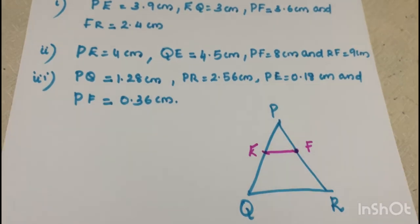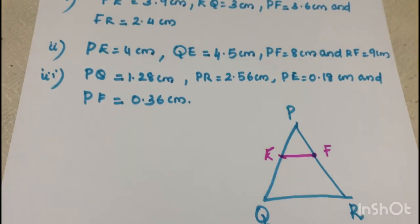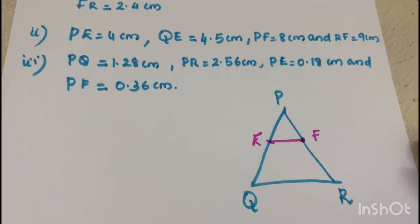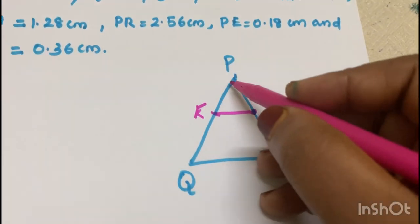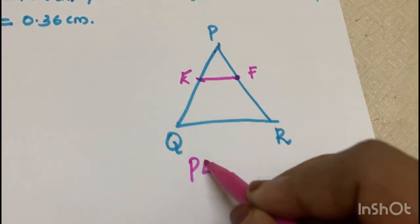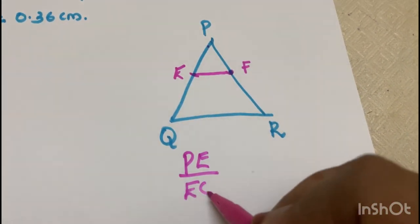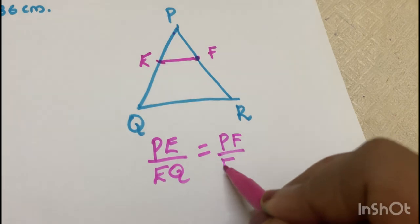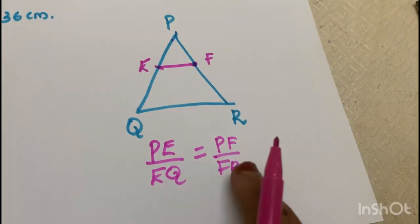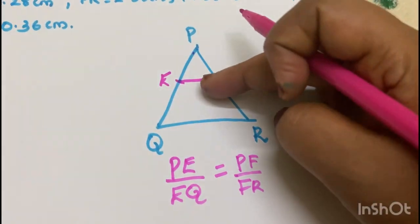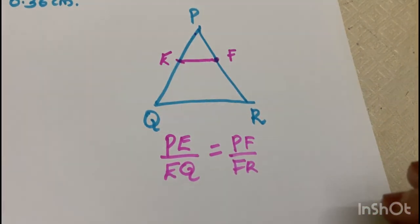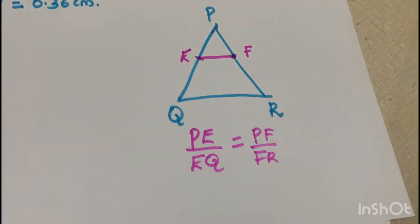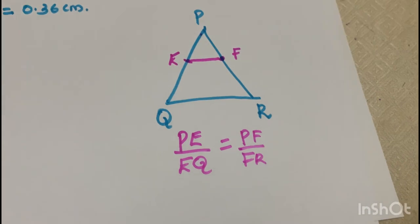Let's start with an introduction. The Converse of Basic Proportionality Theorem. What is the Converse of Basic Proportionality Theorem? If PE by EQ is equal to PF by FR — that is, the ratio is the same — then EF is parallel to QR.